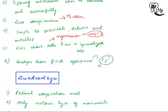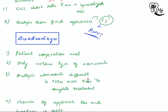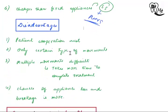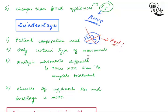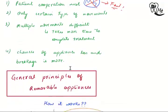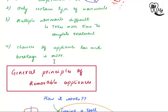Removable appliances are cheaper because you only need stainless steel wire and pliers. However, the disadvantages are that patient cooperation is a must — if the patient does not wear the appliance, the treatment will fail. Only certain types of movements are possible, and multiple movements are difficult. They take more time to complete treatment, and there is a greater chance of appliance loss and breakage.